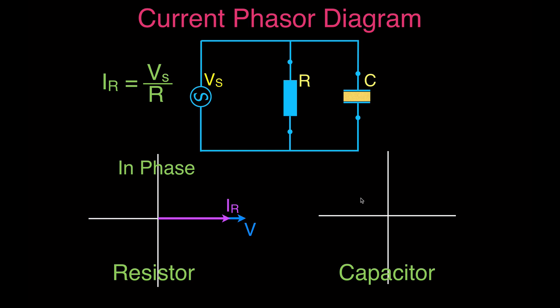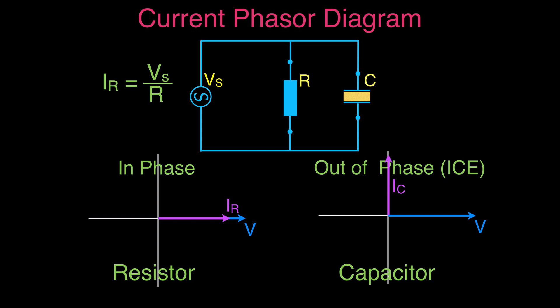If we have a purely capacitive circuit, we draw the voltage on the x-axis, and the current and voltage will be out of phase. Remember ICE — the current leads the voltage in a capacitive circuit by 90 degrees. To calculate the current, we take the voltage of the source divided by the capacitive reactance. Whether you use maximum voltage or RMS voltage determines whether you get maximum current or RMS current.